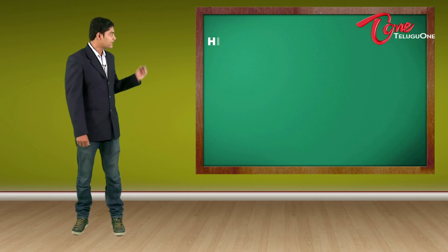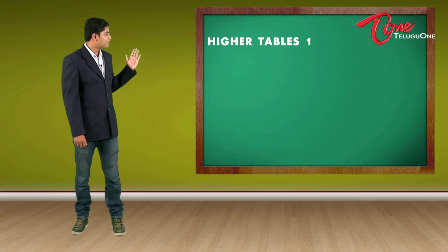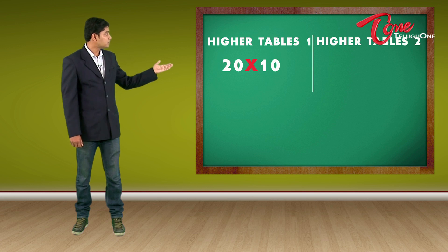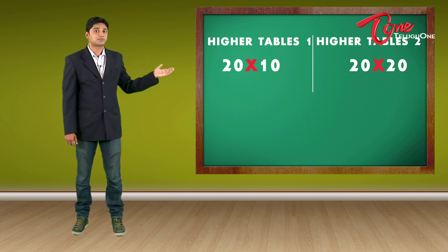We are going to break our tables after 20 into 2 parts. The first part is going to be called Higher Tables 1 and the second part is going to be called Higher Tables 2. In Higher Tables 1, we are going to learn tables up to 20 times 10 and in Higher Tables 2, we are going to learn tables up to 20 times 20.